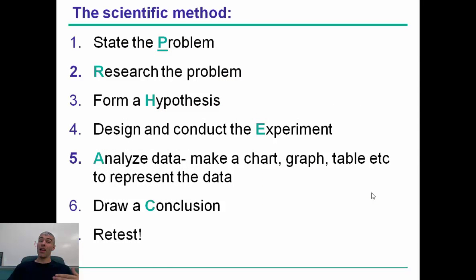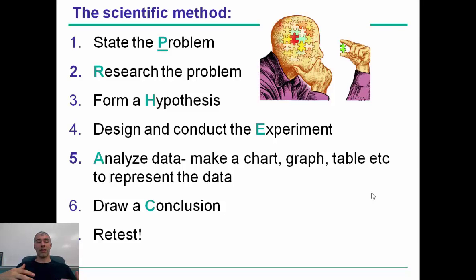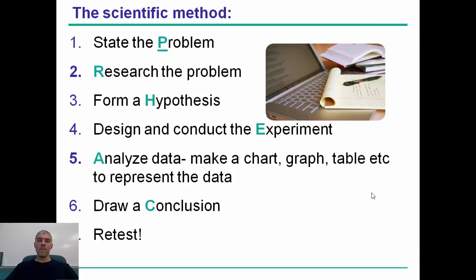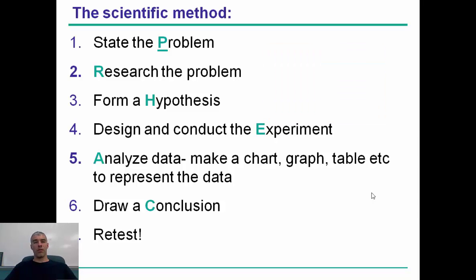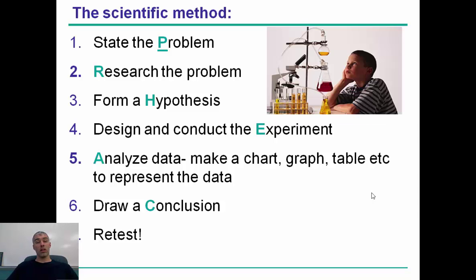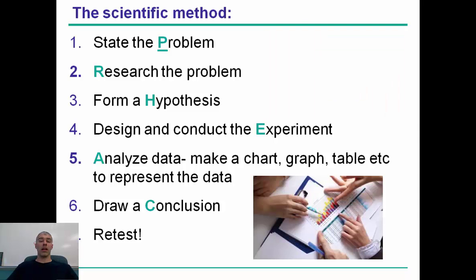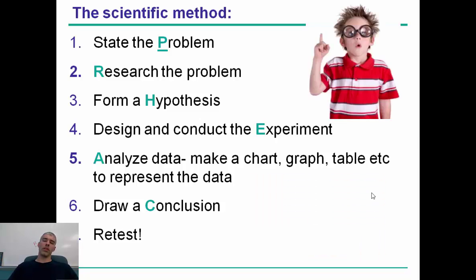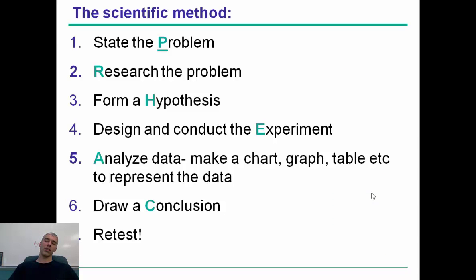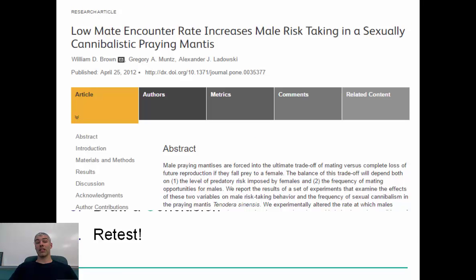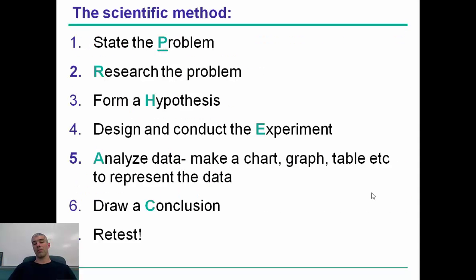You just have to know how to think properly — that's going to be my focus this year, to teach you how to think. The scientific method: state the problem, research that problem to become as educated as you possibly can, formulate your hypothesis, create and conduct an experiment, analyze the data, and draw conclusions. Then retest it over and over again to make sure your data is consistent. At the end, you write a paper, and that paper is sent out to lots of different scientists to read — that's called peer review.